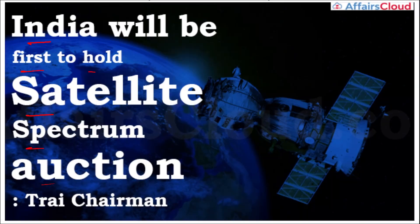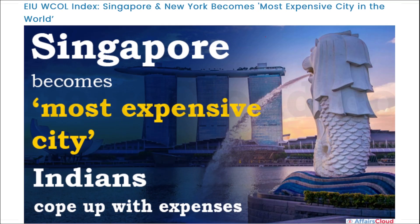Next, India will be the first country to hold a satellite spectrum auction as per TRAI's chairman. This will be satellite communication spectrum, and India will be the first country to conduct such an auction. This is seen as a way to attract investment in satellite communication spectrum.